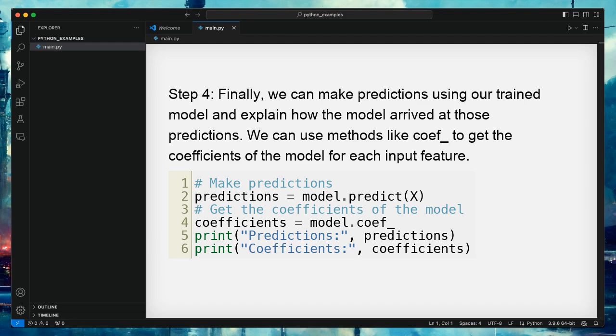Step 4. Finally, we can make predictions using our trained model and explain how the model arrived at those predictions. We can use methods like coef_ to get the coefficients of the model for each input feature.